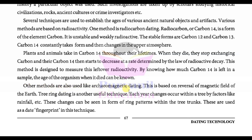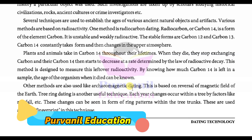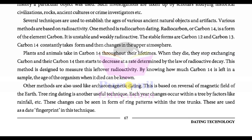Other methods are also used, like archeomagnetic dating — aasivi pura tattva chumbakiye samay nirdhaaran. This is based on the reversal of the magnetic field of the earth — aa paddhati pruthvina chumbakiye kshetra na parivartan par aadhaarit chhe. Tree ring dating is another useful technique — vruksna thad na valayo thi thattun samay nirdhaaran pan ae biji ek upyogi technique chhe.